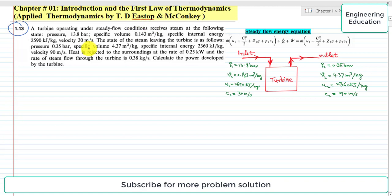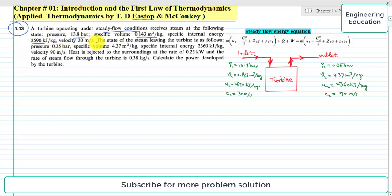In Problem 1.13, we have given that a turbine operating under steady flow conditions receives steam at the following state: pressure 13.8 bar, specific volume 0.143 cubic meter per kilogram, specific internal energy 2590 kilojoules per kilogram, velocity 30 meter per second.